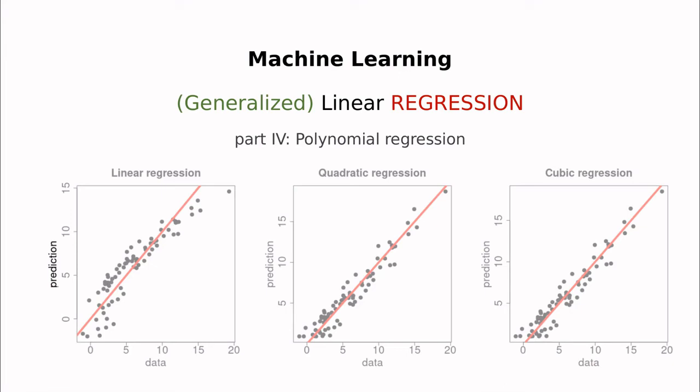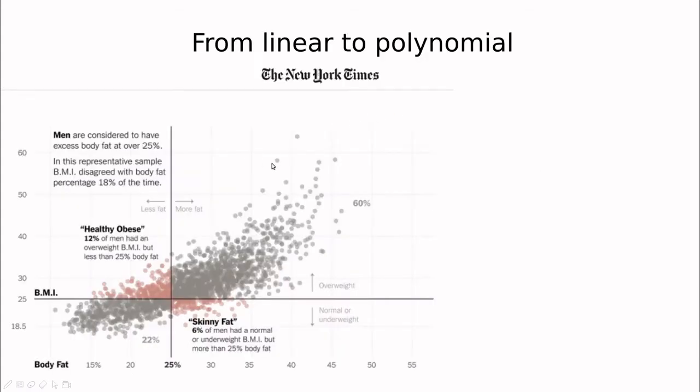The last video in this introductory series on linear regression is going to be how to generalize this idea of linear regression to polynomial regression. If you go back to this example that we started with, in which we're trying to plot BMI, which is body mass index versus body fat, we see this sort of nonlinear relationship.